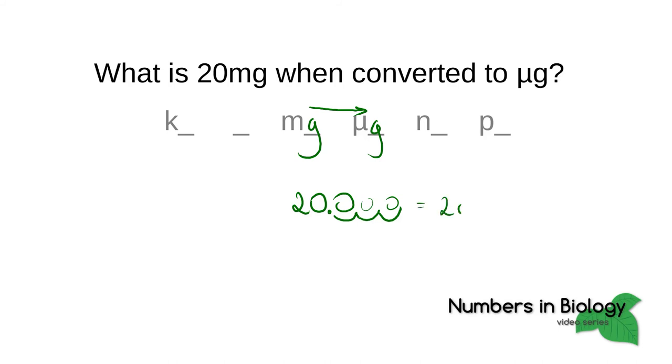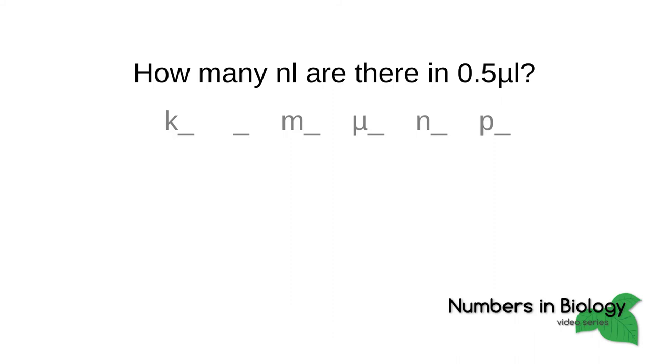Let's try another one. How many nanoliters are there in 0.5 microliters? So we need to know about microliters and nanoliters, and we are going from micro to nano. We're going to start with 0.5 microliters and now we're going to shift the decimal point by three spaces: one, two, three. Fill in the extra zeros in the spaces we have available and that becomes 500—there's the decimal at the end there—nanoliters. So that is your answer right there.